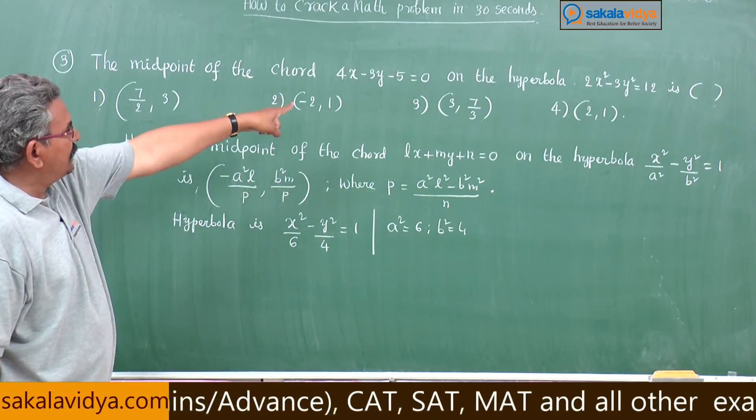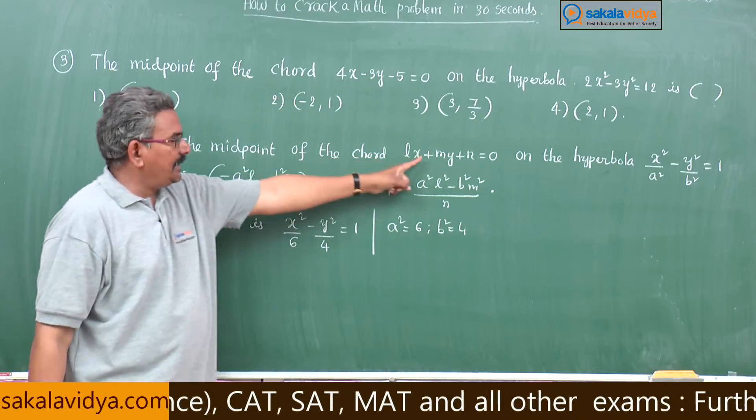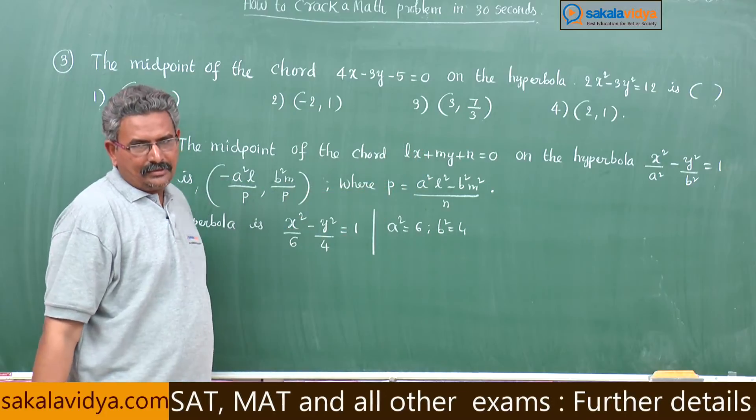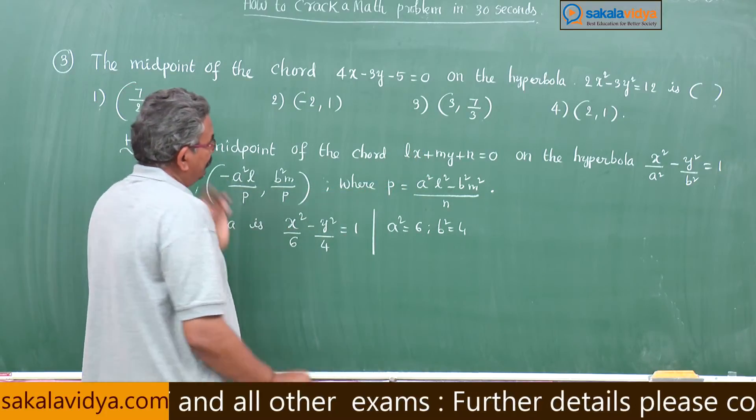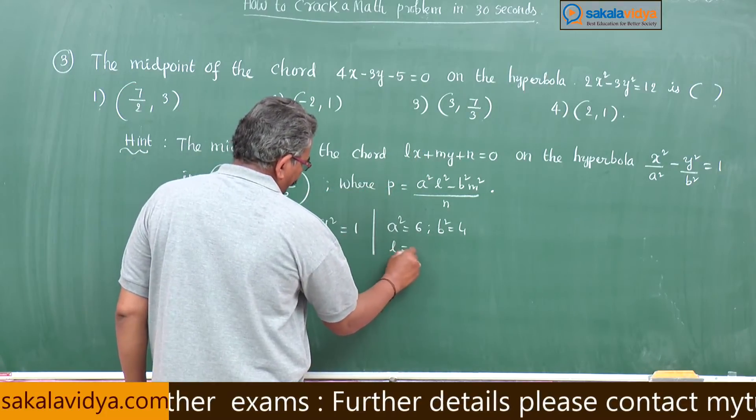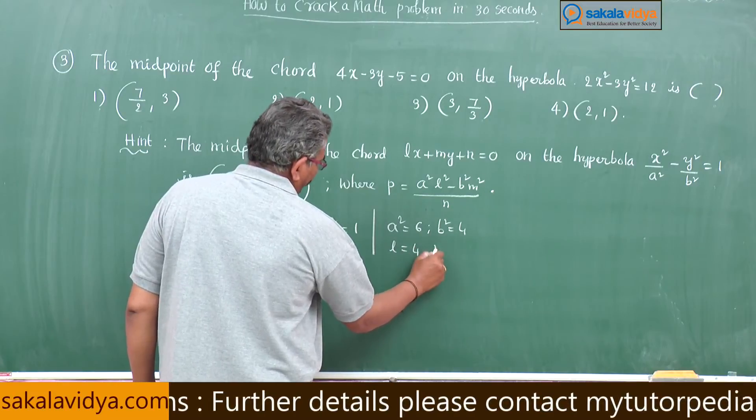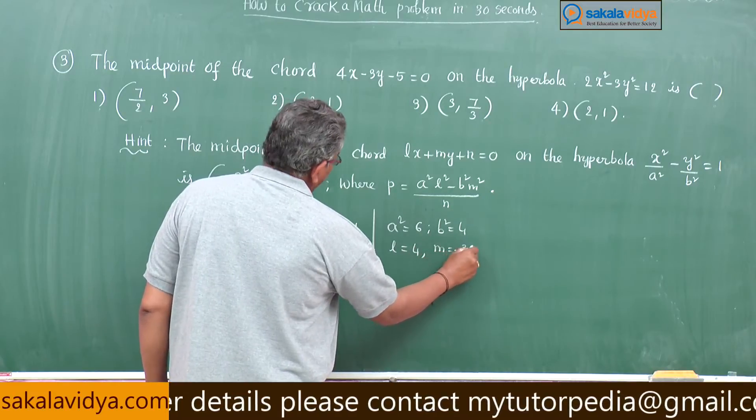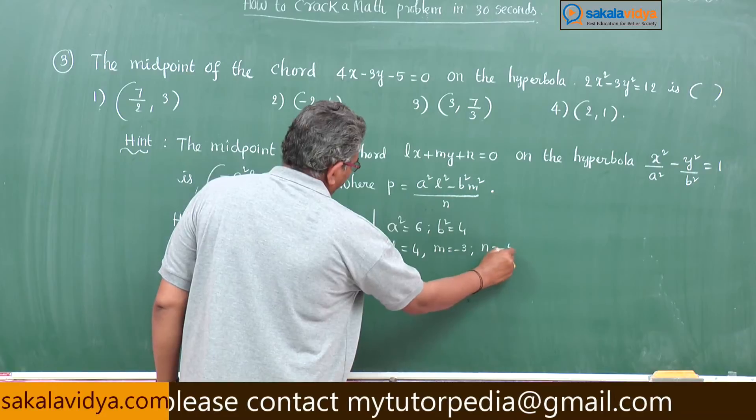Same this 4x minus 3y minus 5 equals 0, comparing to this chord equation we get l equals 4, m equals minus 3, n equals minus 5.